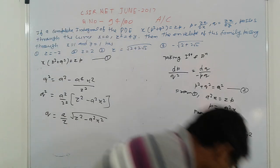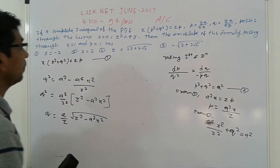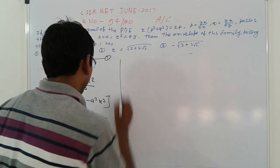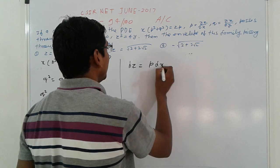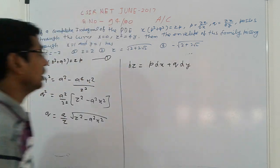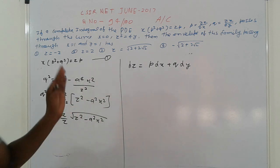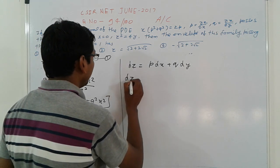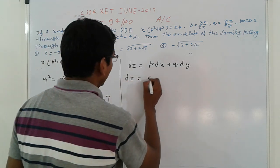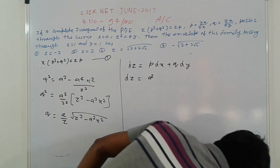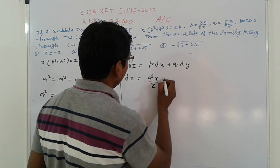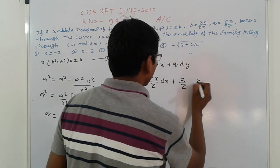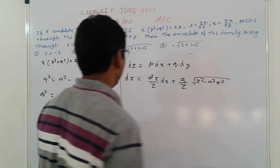Everyone knows dz = p·dx + q·dy. Putting in the values: dz = (a²x / z)dx + (a / z)√(z² − a²x²)·dy.